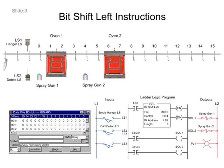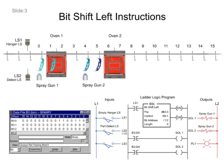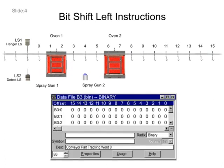An example of the BitShiftLeft instruction includes tracking parts for a spray painting application. Positions 0 through 15 of the paint line match the length of the word in the BitShiftLeft instruction.